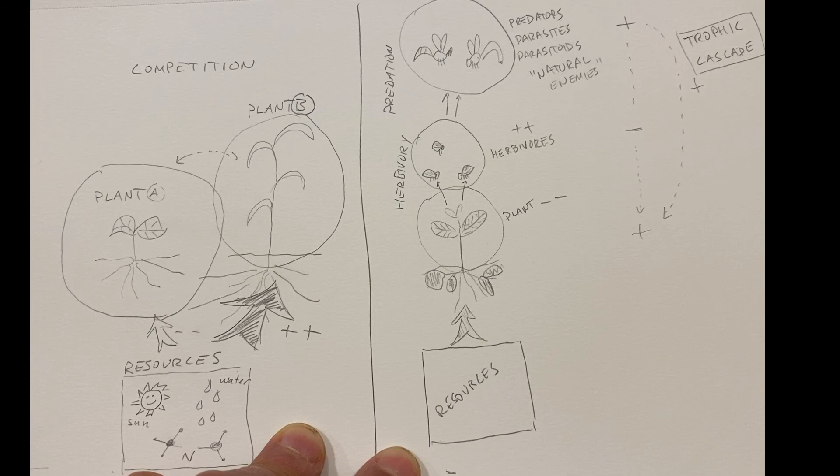Another way to say this is that the enemy of my enemy is my friend. So if you're a plant, your enemy is the herbivores, your friends are going to be the predators and parasites. Because when they're around, you're going to get less eaten. And we refer to this as a trophic cascade.